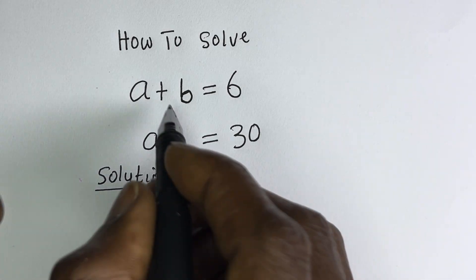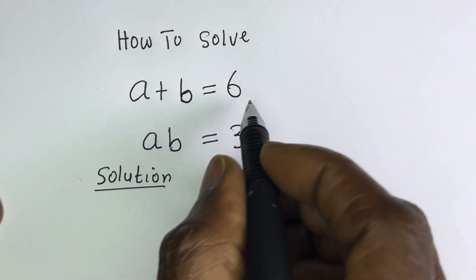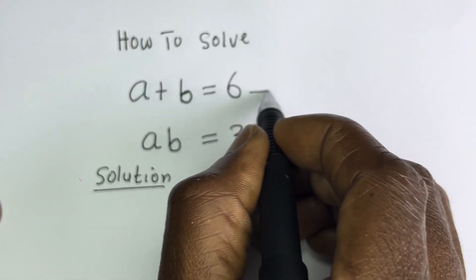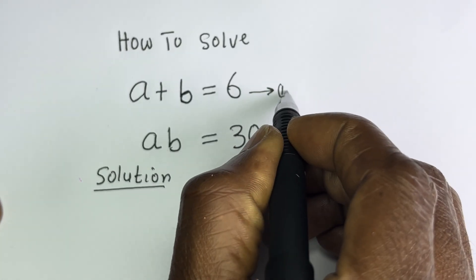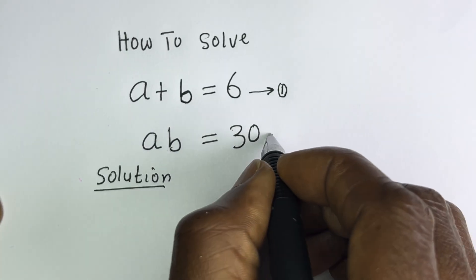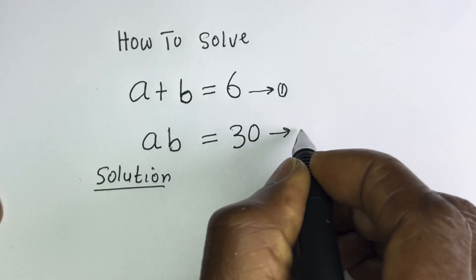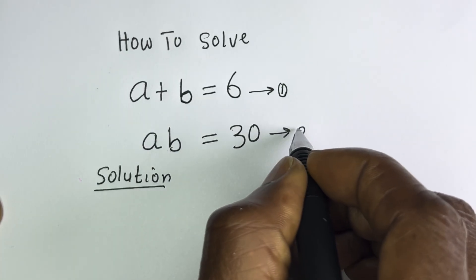Then A plus B is equal to 6 — let's call this equation 1. AB is equal to 30 — let's call this equation 2.